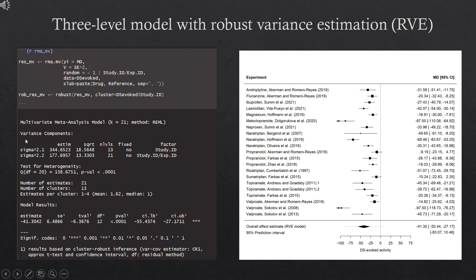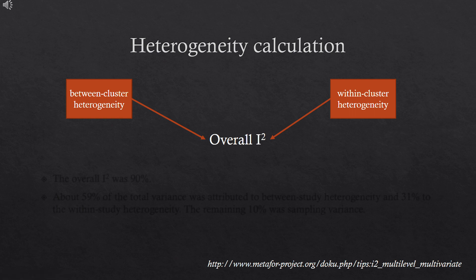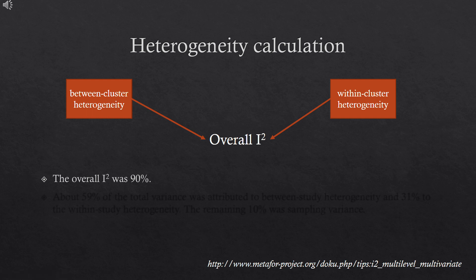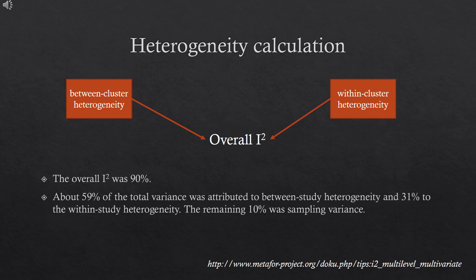Note that the model includes two variance components for between- and within-study heterogeneity, making it possible to examine the distribution of variance at the level of an experiment and a study. Guidance on calculating heterogeneity for multi-level and multivariate models can be found on the metaphor package website. In our study, the overall I-squared was 90%: about 59% of the total variance was attributed to between-study heterogeneity and 31% to within-study heterogeneity, with the remaining 10% being sampling variance.